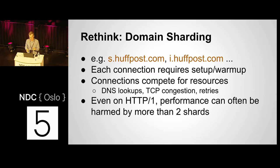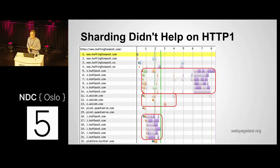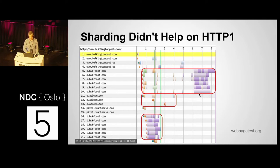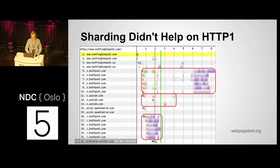Research has shown that two domains is the most you should ever use with domain sharding. But here's an example showing that two is still too many. Looking at webpagetest.org with s.huffpost.com and i.huffpost.com: when one was busy, the other was not, so we weren't even using the connections in a way where we needed two different domains — but we paid the cost of looking up the domain and warming up the connection twice.